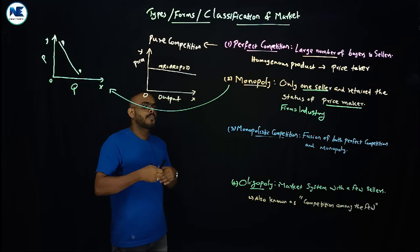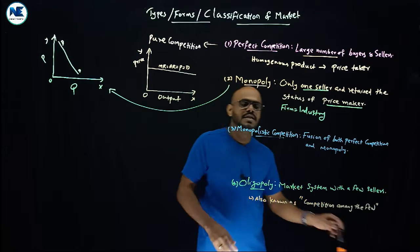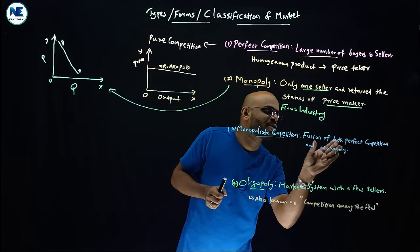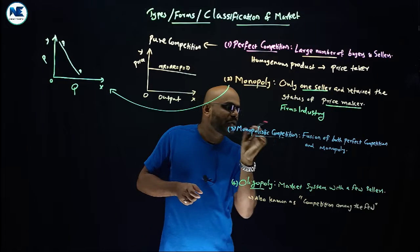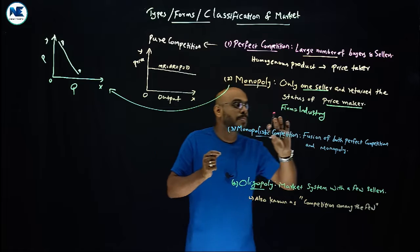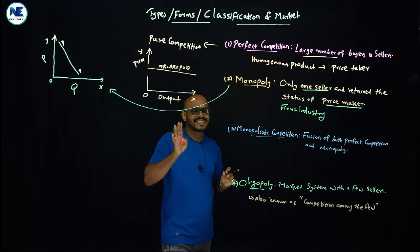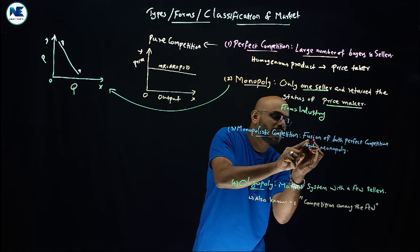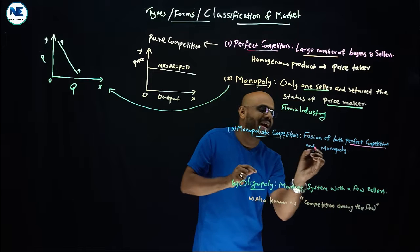Now we can discuss monopolistic competition, which is also a very interesting area. Monopolistic competition is a fusion of both perfect competition and monopoly. It represents a market structure where you can see the combination of characteristics of both perfect competition and monopoly. That is the keyword: it is the situation where there is a fusion of both perfect competition and monopoly.